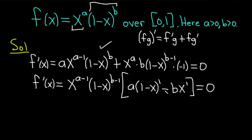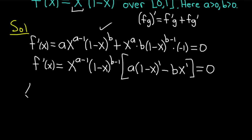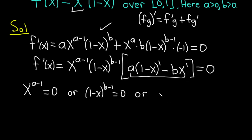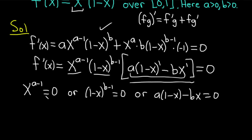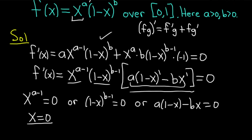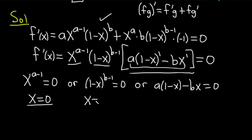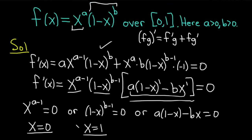Now we have a product equal to zero, so we set each factor equal to zero. Setting x^(a-1) equal to zero gives x = 0. Setting (1 minus x)^(b-1) equal to zero gives x = 1. Both of these are endpoints of our interval, so they're not new critical numbers — we'd be testing them anyway.